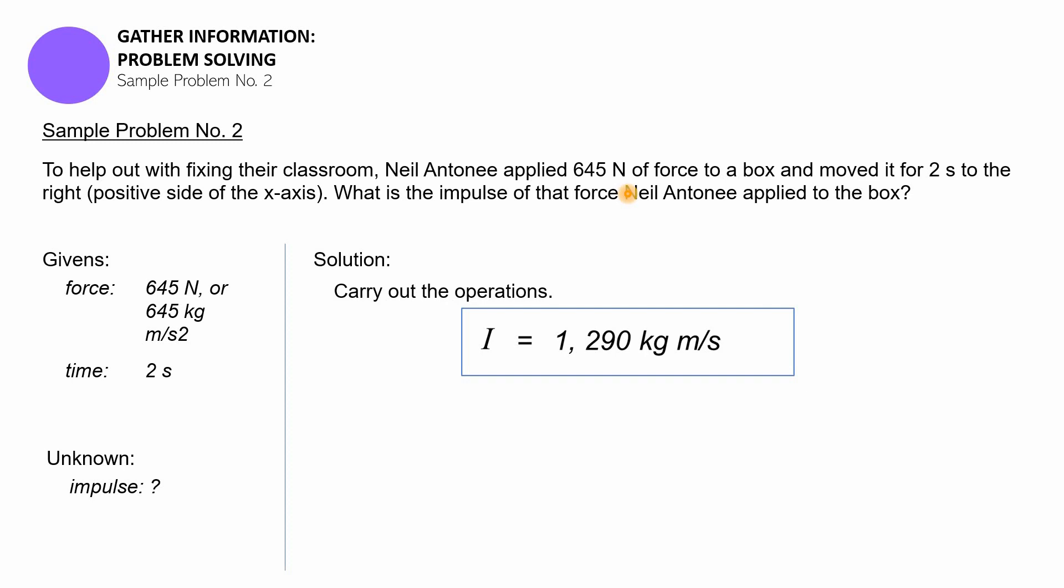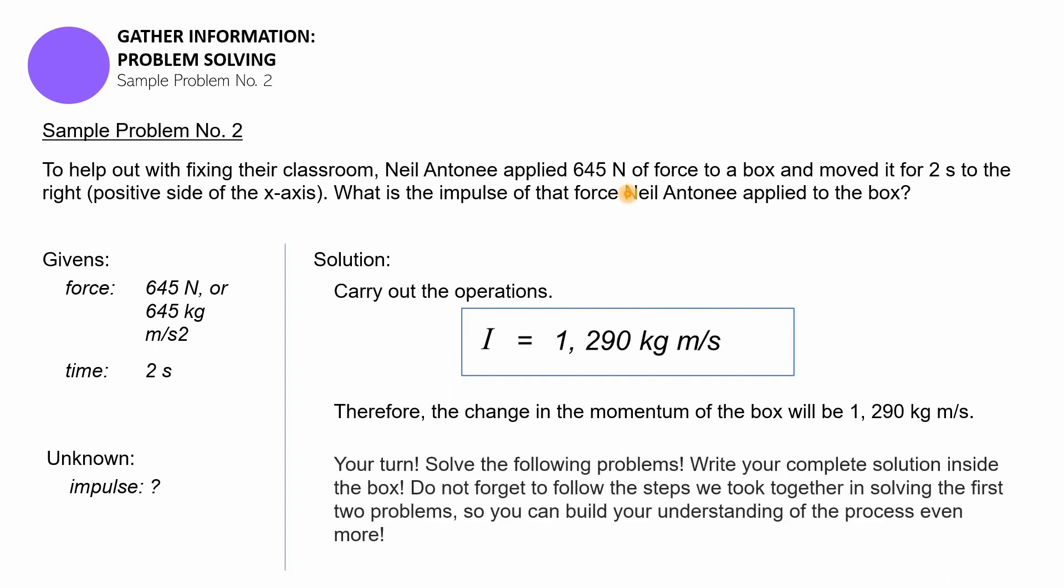It's going towards the right, the way Neil applied it, so there will be a change in the momentum of the box of around 1,290 kilograms meters per second going towards the right. That ends the second sample problem.